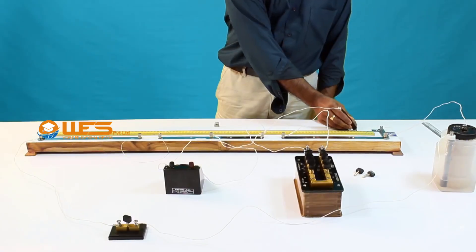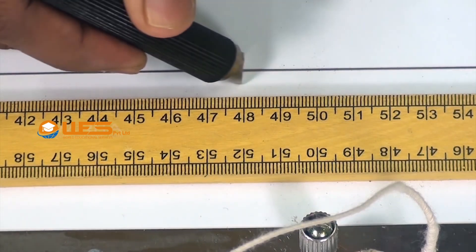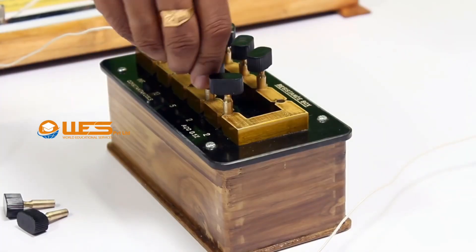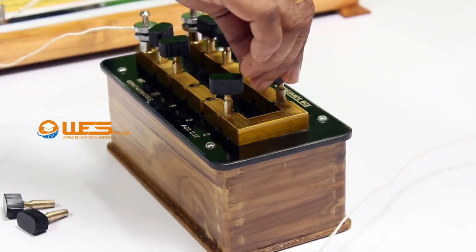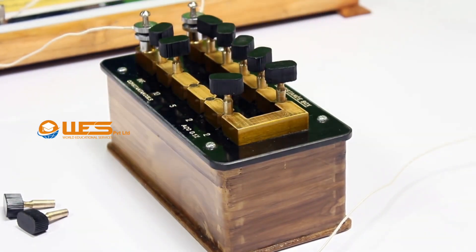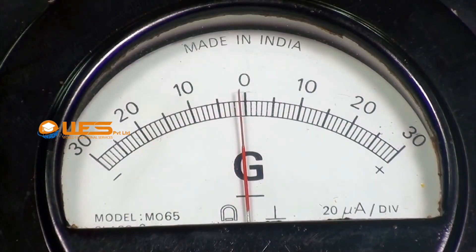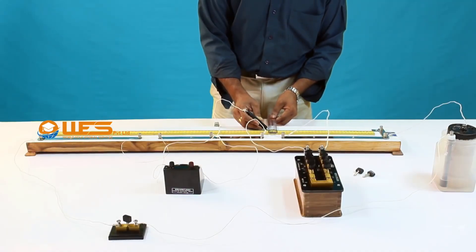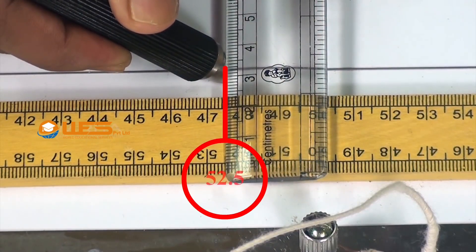Press the jockey almost at the middle of the wire on the meter bridge and introduce a suitable resistance R in the resistance box so the galvanometer shows zero deflection. Measure the distance L from terminal A to the balancing point.